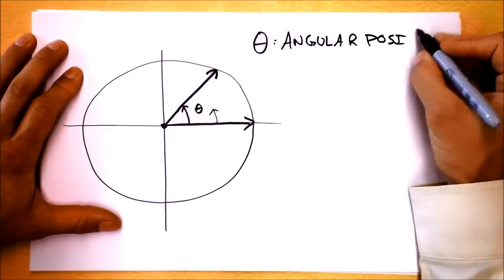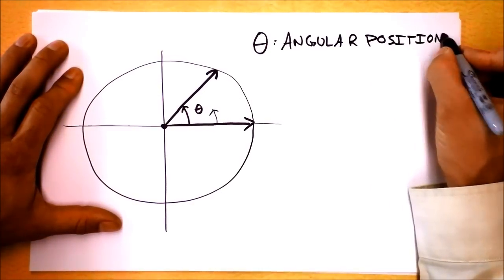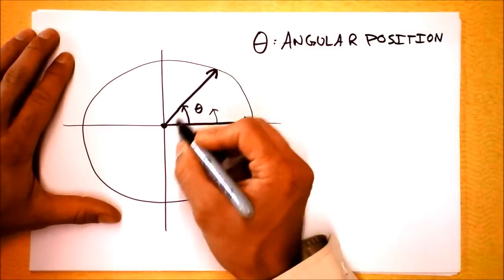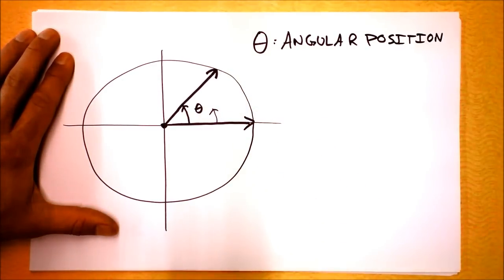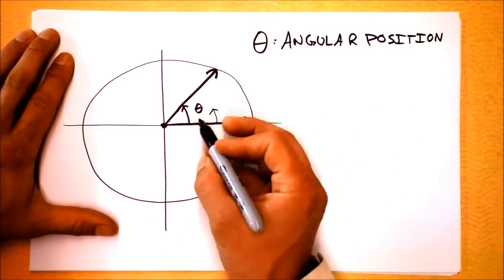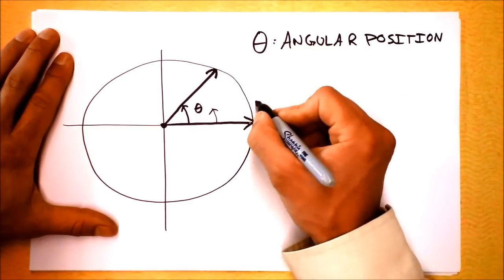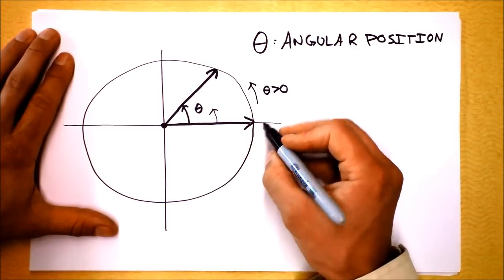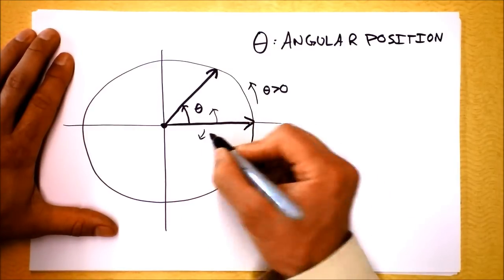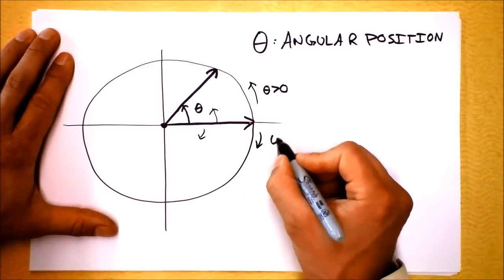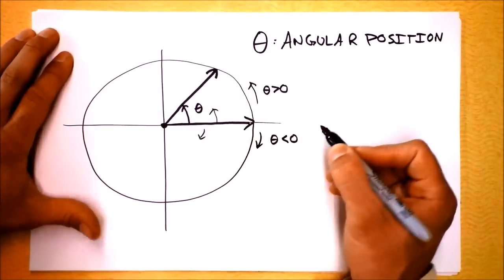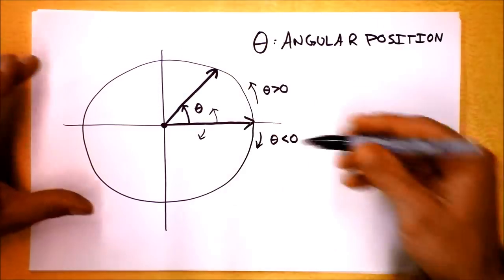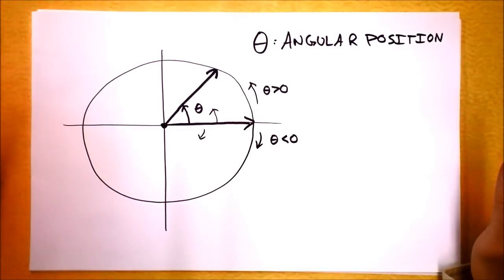So theta is going to be kind of like x for us on things that are spinning around. And the idea is that we're going to use radians to measure theta and I'll tell you why. First of all, let me say that theta is positive this direction. This would be theta greater than zero. But if theta is this direction, then this would be theta less than zero.